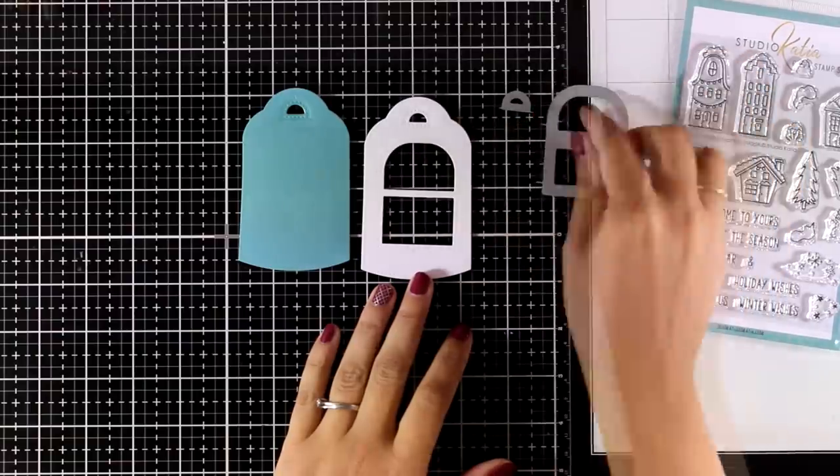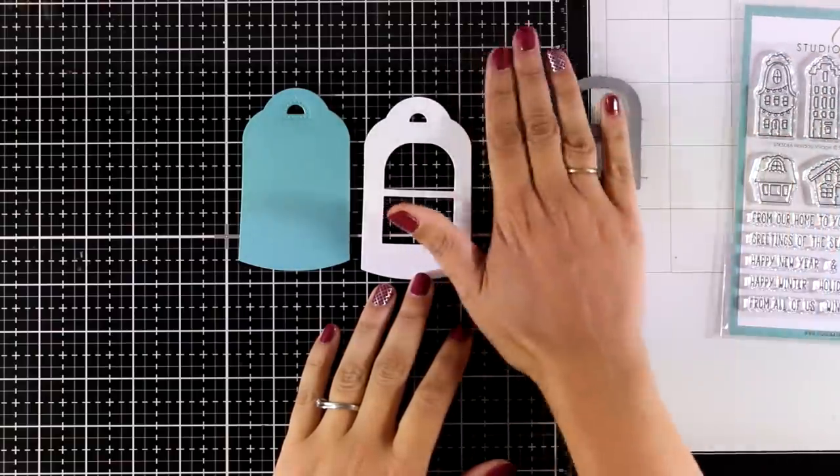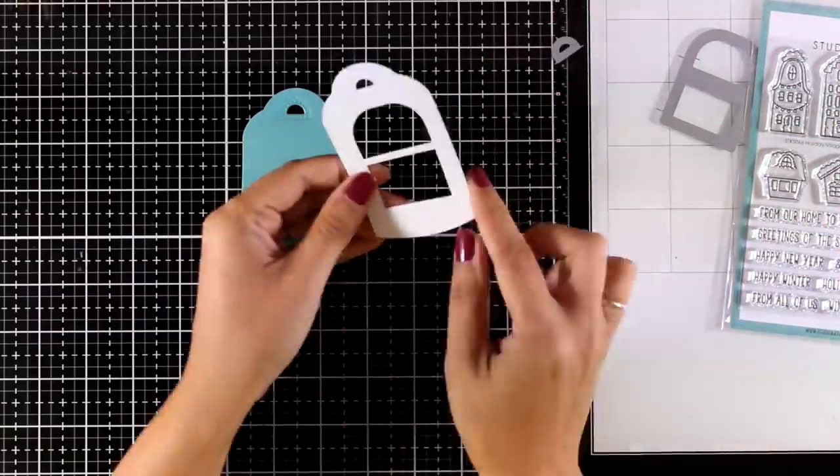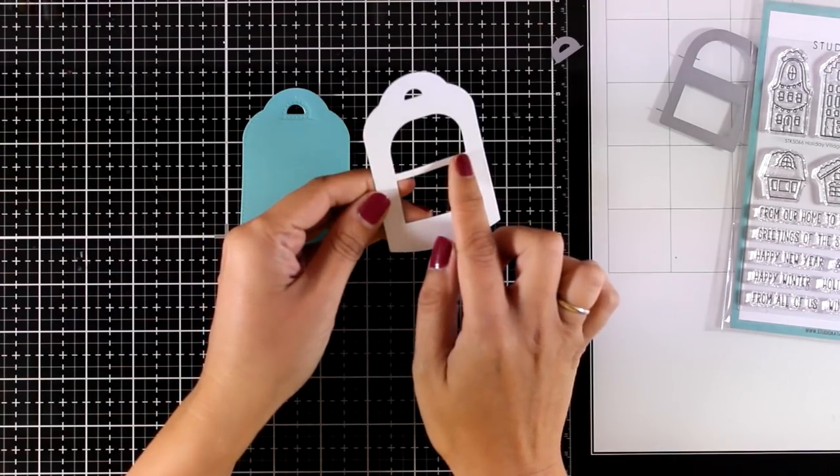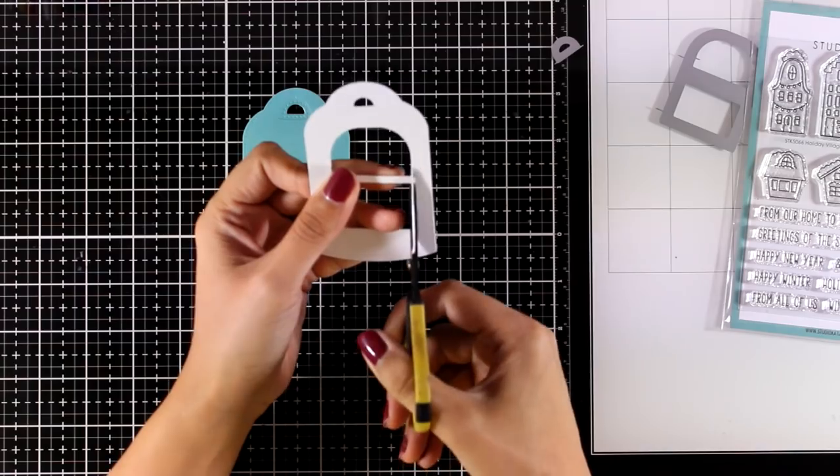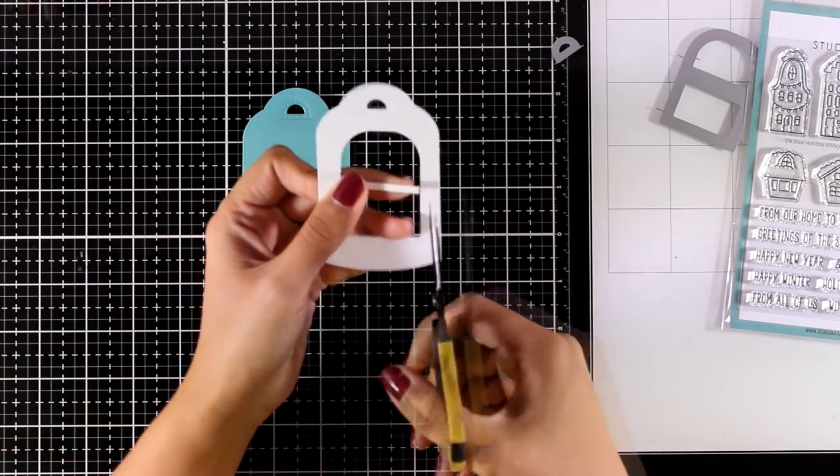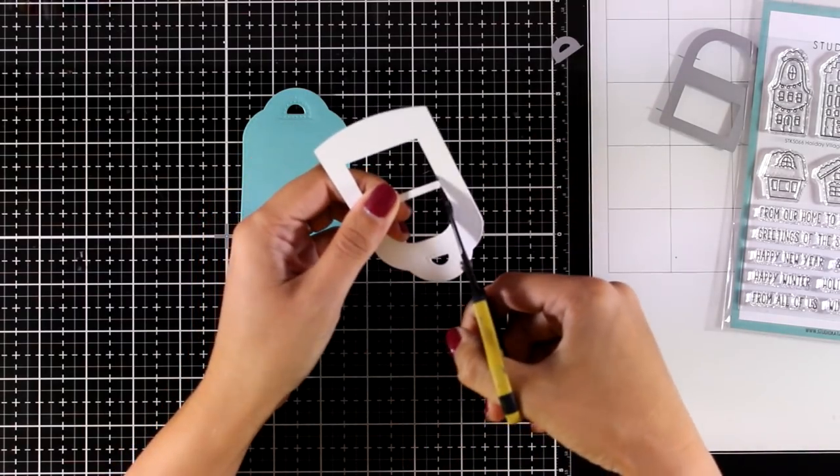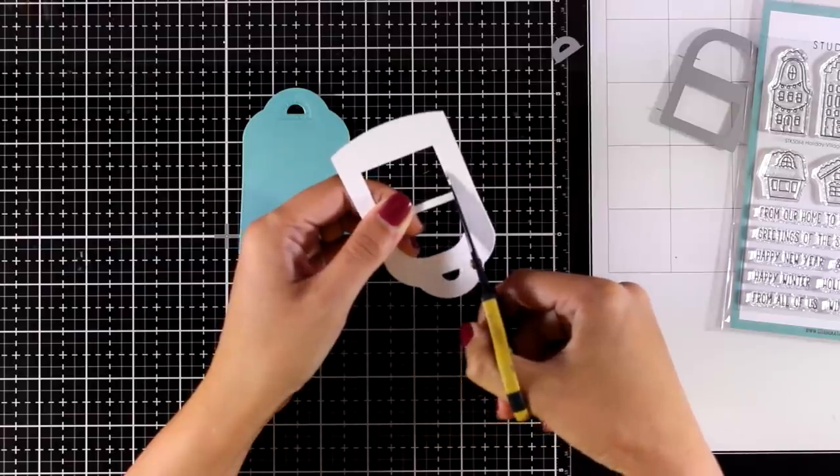I die cut two tags, one blue and one white, and on the white one as you can see I've placed the inside die as well. Now I end up having this lovely window. For this tag I don't want to have this middle piece so I'm just going to cut it out with my scissors.